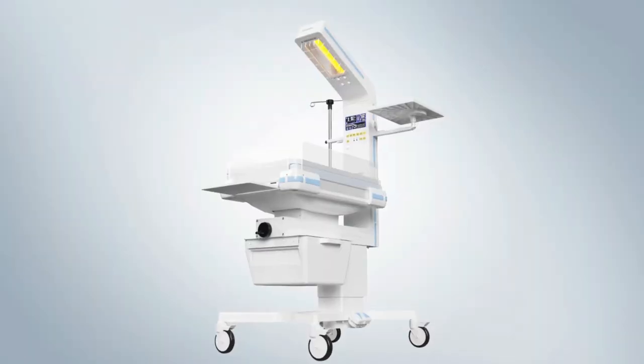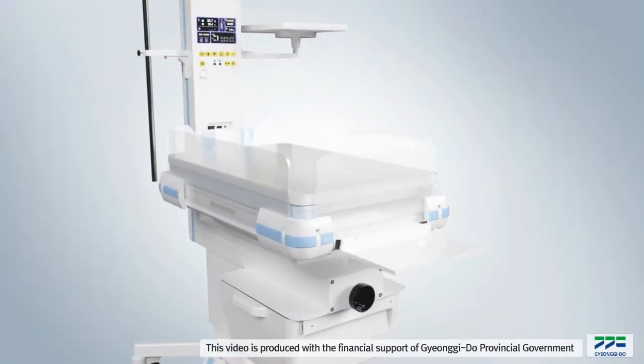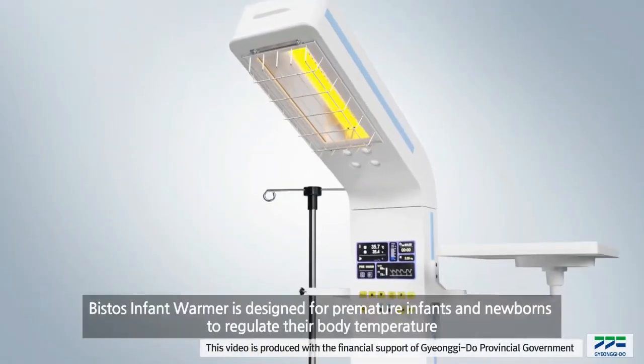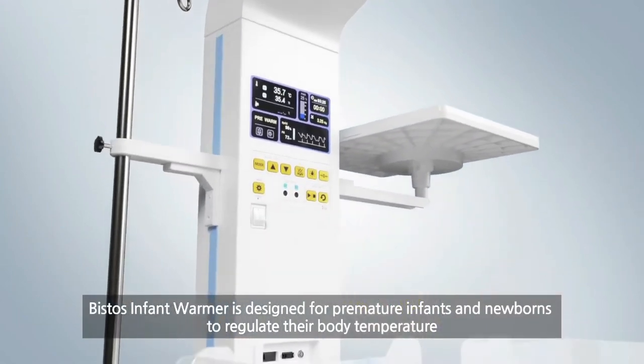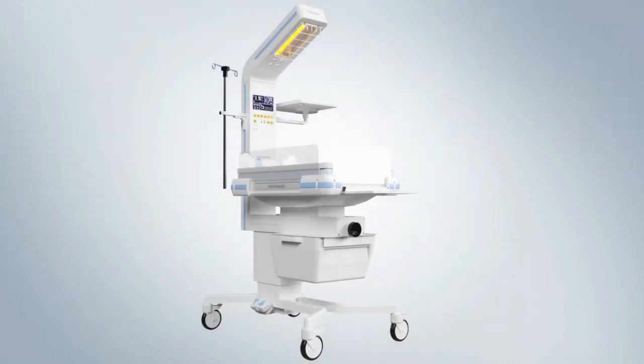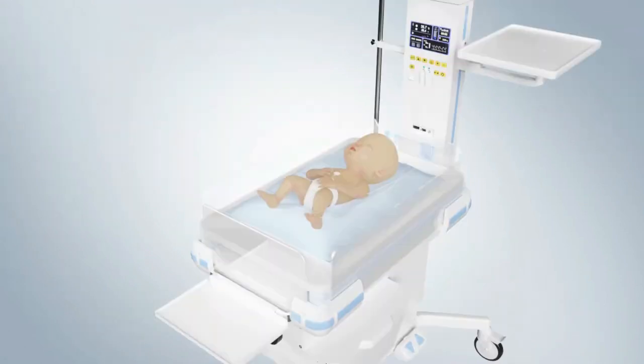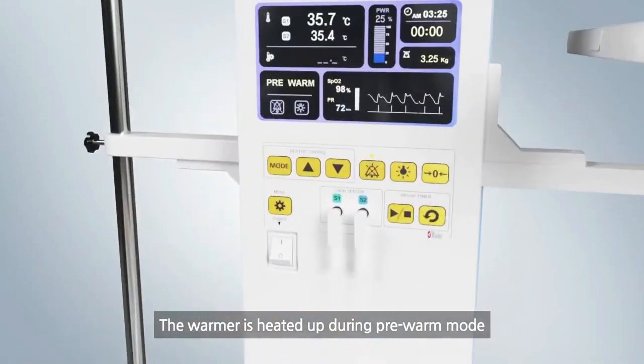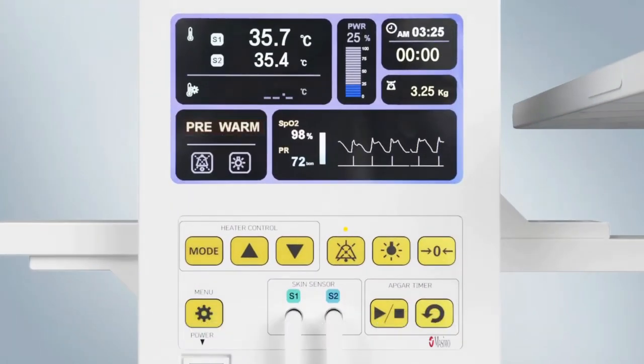Let's look at radiant warmers. Radiant warmers are regularly used in delivery rooms and neonatal care units to simultaneously provide external heat and open access to newborns. Immediately following birth, infants are routinely placed under the warm radiant light to help stabilize their temperature until they can achieve self-thermoregulation.